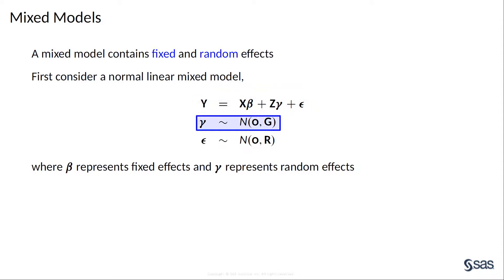The random effects are assumed to be normal with a covariance matrix G. For the error term, the covariance matrix is R.